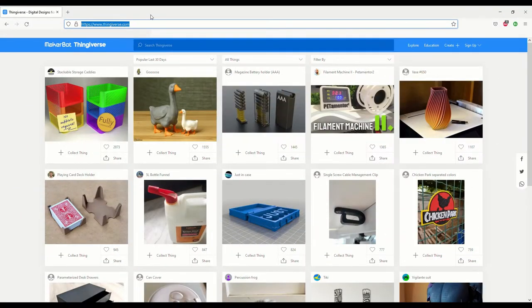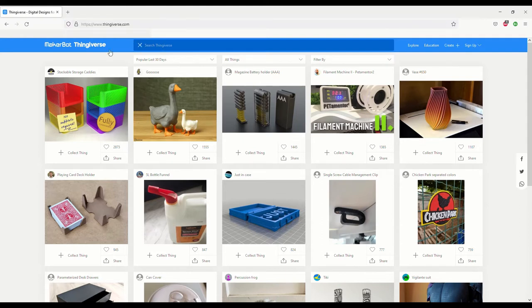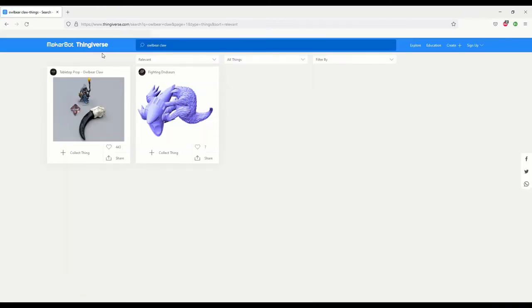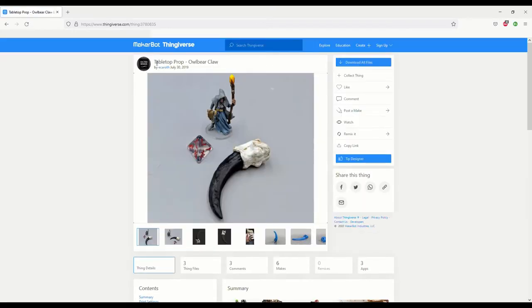First and foremost I originally got this STL file from Thingiverse. If you search Thingiverse for Owlbear Claw you can easily find this thingy. It was made by Evan Carators from AC3D Design. This is it, let's go make one of these.